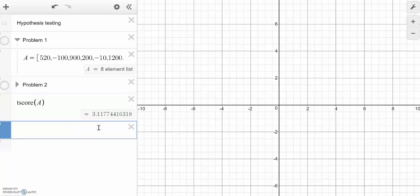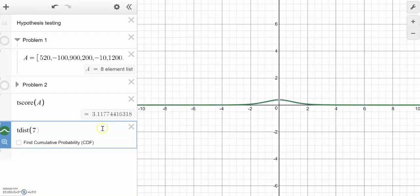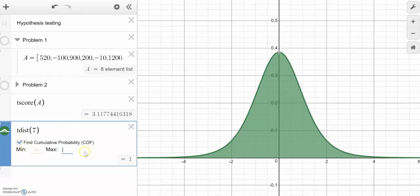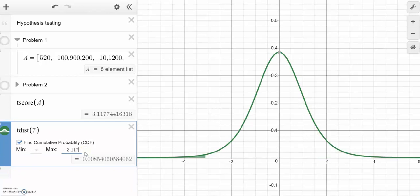If I were to graph this and get an idea of how unusual this is, I could do the t distribution. I know I have seven degrees of freedom. I can zoom in on that guy. And I would like the probability from negative infinity up to negative 3.1177. So I can kind of do the hypothesis test here just using t score and t distribution.